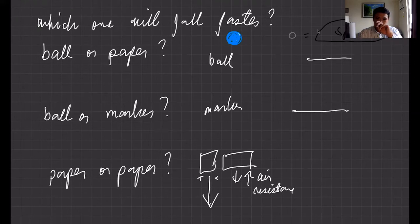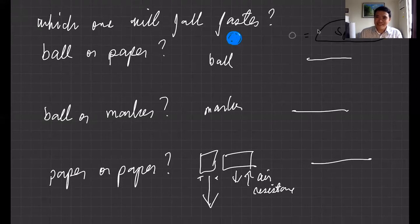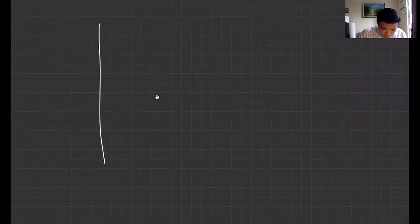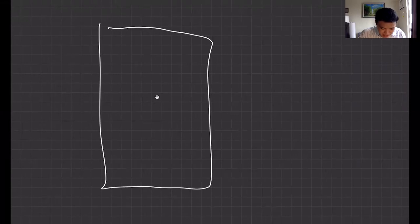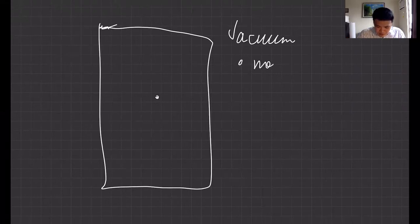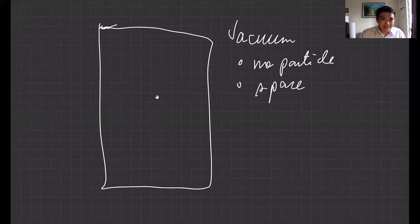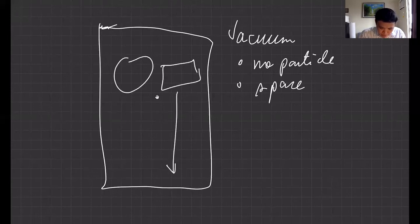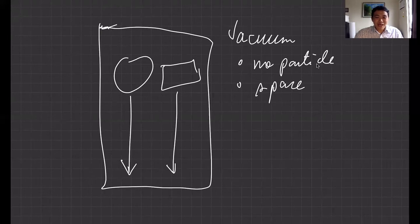The paper with the smaller surface area — the one oriented edge-on — will fall faster than the one with the higher surface area because it has less air resistance. The flat one wobbles a bit because of air resistance, but if it's stable it falls faster. In space or vacuum it doesn't matter. If you have a sealed vacuum with no air, no particles, basically like outer space, whether you have a ball or a paper they will fall at the same time.